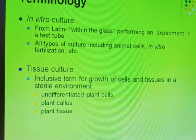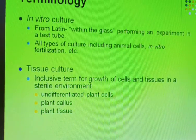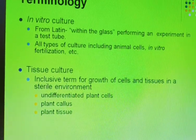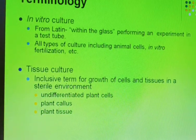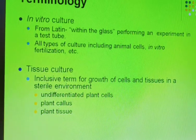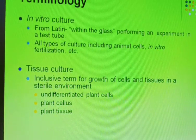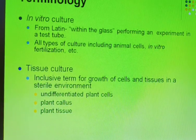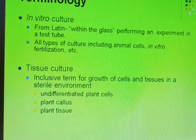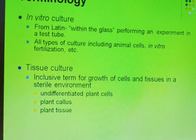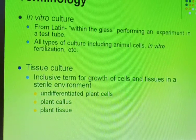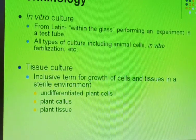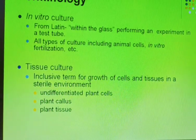All types of culture, including animal cells, can be in vitro. In vitro fertilization is an example of in vitro culture. Tissue culture is the growth of cells and tissues in a sterile environment — when cells or tissues are grown in lab conditions, that is known as tissue culture. Examples include undifferentiated plant cells, plant callus, and plant tissues.